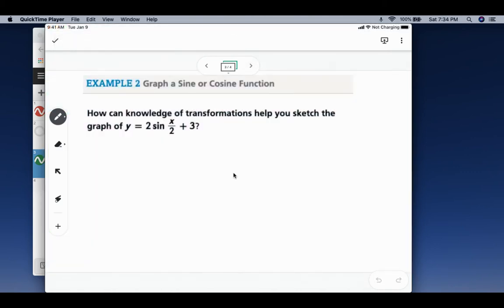Example two says to graph a sine or cosine function. How can knowledge of transformations help us sketch the graph of y equals 2 sine of x over 2 plus 3? So I like to make a little list of all the things. Our amplitude here is 2. The period is 2 pi over b. And our b value, in this case, you have to think about what's in front of the x. It'd be 2 pi divided by 1 half, which is going to give us 4 pi. And then that plus 3 at the end is going to be a shift up 3.